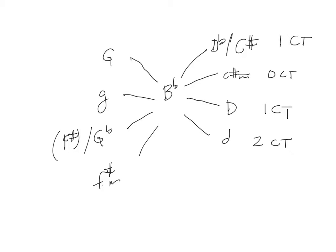On the other side, B-flat, D, F compared to G, B-flat, D has one common tone: D. G, B-flat, D has two common tones with B-flat, D, F: B-flat and D. Continuing, G-flat, B-flat, D-flat shares tones with B-flat, D, F. And lastly, F-sharp, A, C-sharp — which you could think of as G-flat, B-double-flat, D-flat — has no common tones.